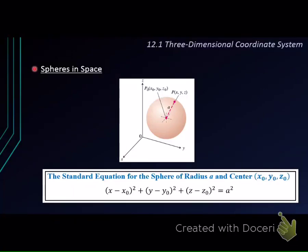In this topic, we are going to learn to write the standard equation for the sphere of radius a units and center at x0, y0, z0. Let's take a look at this graph. If we have a sphere centered at x0, y0, z0 with radius a units, then the standard form of the equation is: x minus x0 squared plus y minus y0 squared plus z minus z0 squared equals a squared.